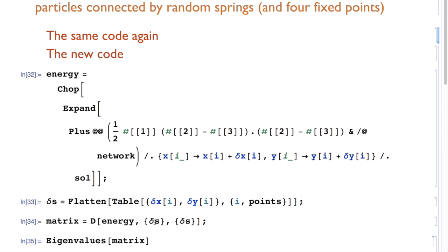Then we take the derivative with respect to all the displacements from equilibrium to second order. The curly brackets over here really mean that this is a matrix of exactly the length twice the number of points by twice the number of points. Then we calculate the eigenvalues of the matrix.